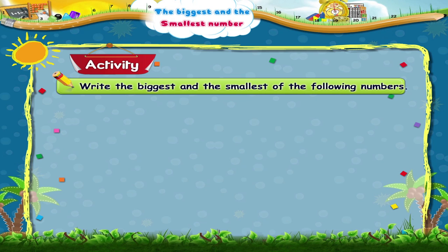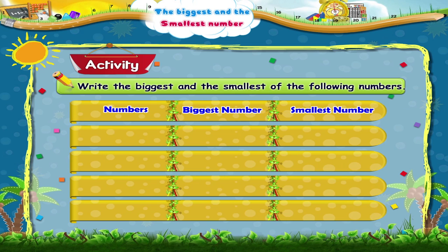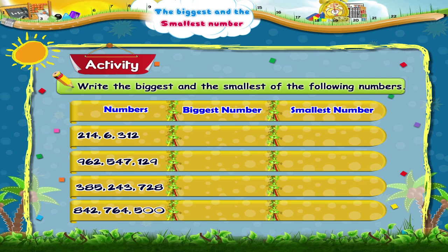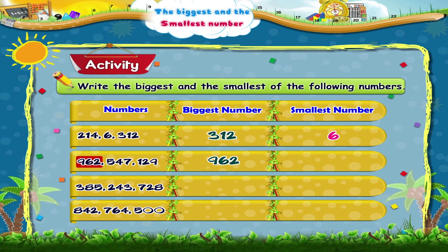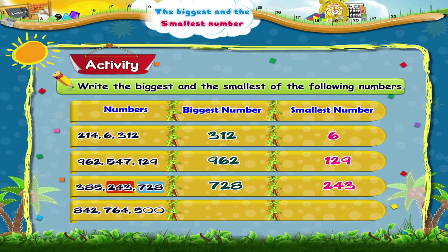Let us do another activity: write the biggest and smallest of the following numbers. In the first set, the biggest number is 312 and the smallest number is 6. In the second set, the biggest number is 962 and the smallest number is 129. In the third set, the biggest number is 728 and the smallest number is 243. In the fourth set, the biggest number is 842 and the smallest number is 500.